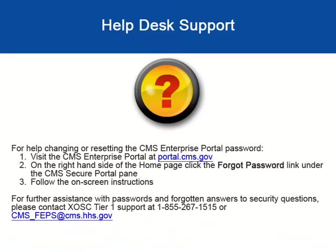Help Desk Support: For help changing or resetting the CMS Enterprise Portal password, 1. visit the CMS Enterprise Portal at portal.cms.gov; 2. on the right-hand side of the home page, click the Forgot Password link under the CMS Secure Portal pane; 3. follow the on-screen instructions. For further assistance with passwords and forgotten answers to security questions, please contact XOSC Tier 1 support at 1-855-267-1515 or cms-feps@cms.hhs.gov.